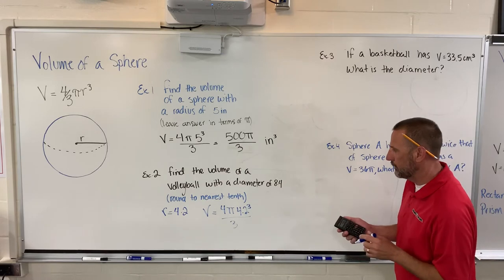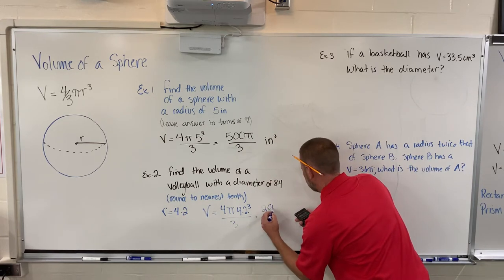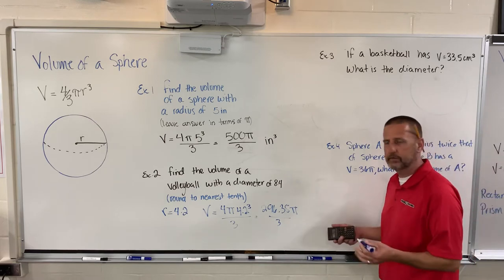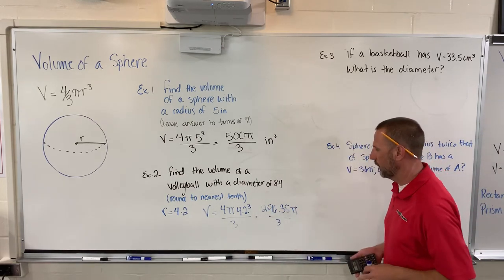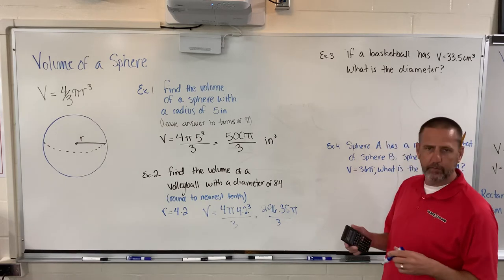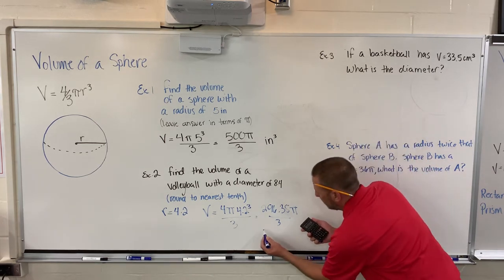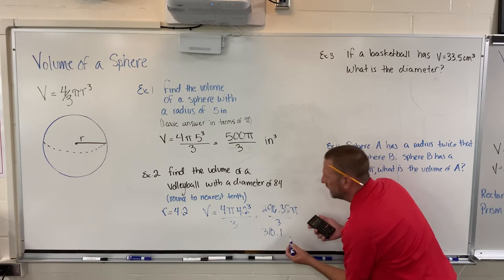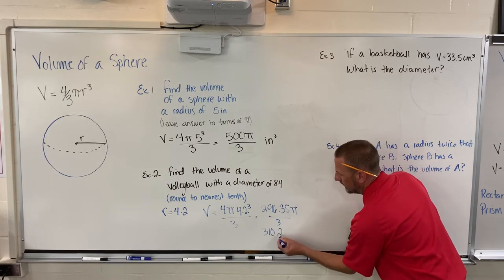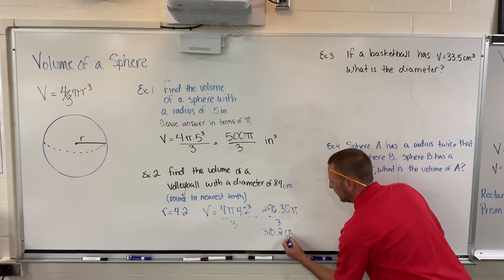Now when I multiply that by 4, I'm sitting at 296.35 but I still have a pi and I haven't divided by 3. I've done the cube, I've done times 4, now I need to times it by pi, so 3.14, and I get 930 and a bunch of decimals. All I need to do now is divide by 3 and I get a final answer of 310.1. It says to the nearest tenth, so I've got 1, 8 which means 5 and up round it up, so I'm going to put that at 310.2 centimeters cubed.